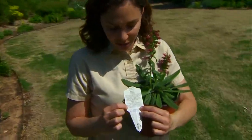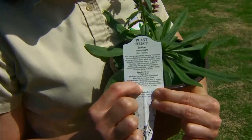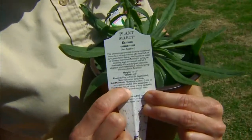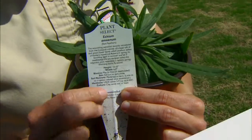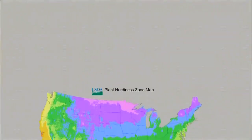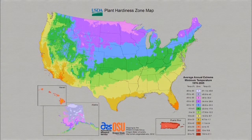The answer to that is found in the USDA Hardiness Zone. We can find information on Hardiness Zone on most plant labels, and we can also find it in catalogs as well as books. The USDA Hardiness Zone relates to a map developed by the United States Department of Agriculture that maps the average minimum temperatures for different areas of the country.